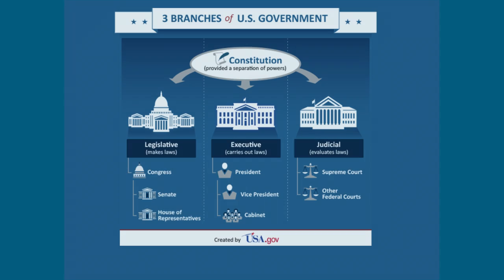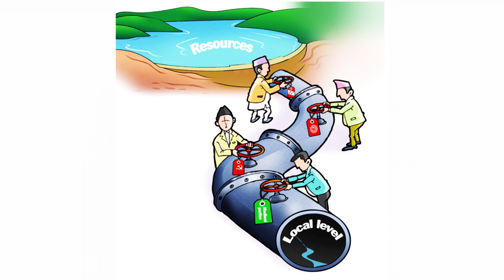Federalism is used in America so that no single body has full control. It is also used to control the flow of materials and resources throughout the entire country. The government would enter a state of shutdown without it.